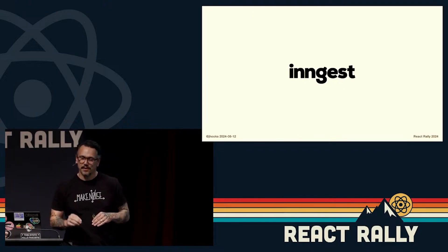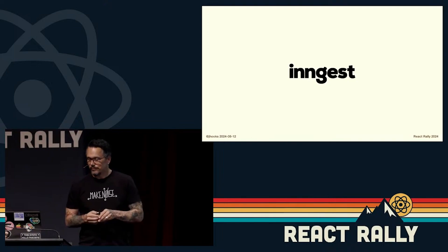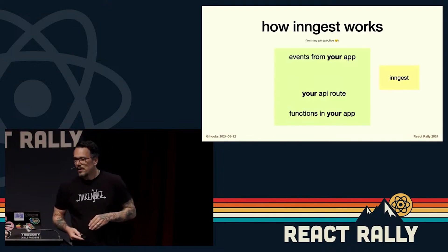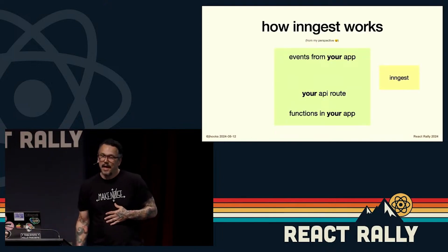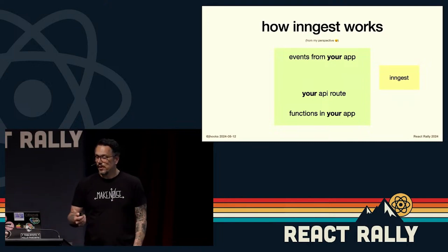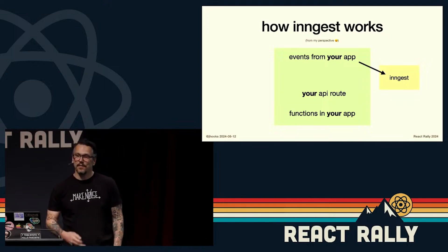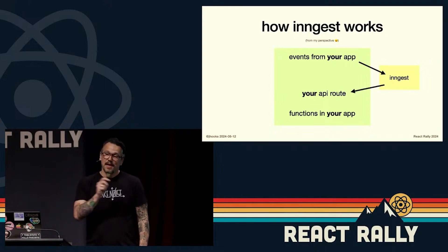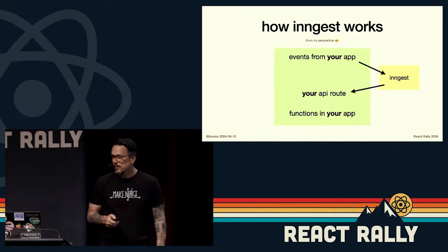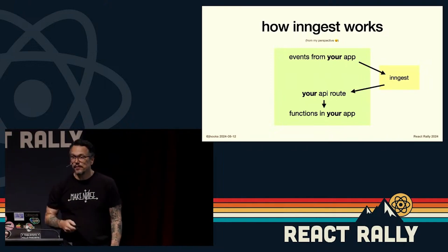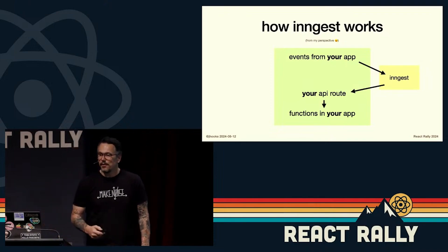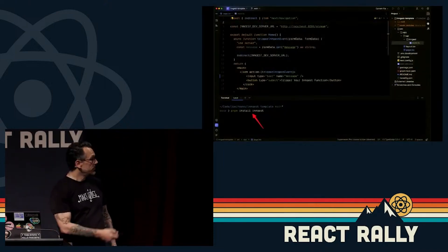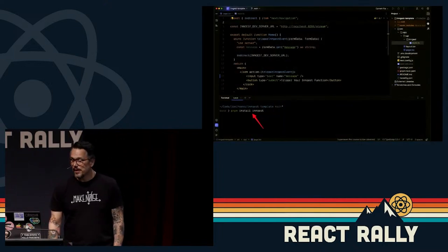Inngest is a service. In your app you install Inngest, you emit events, it goes to their servers, it accesses an API route on your server, it calls functions in your app, and those functions emit events. To install it, it's as easy as npm or pnpm install.